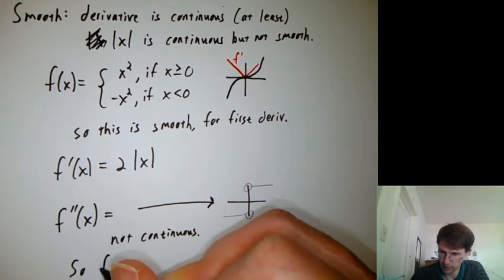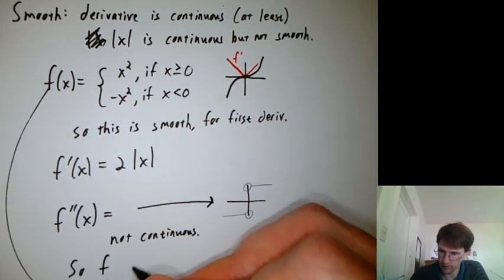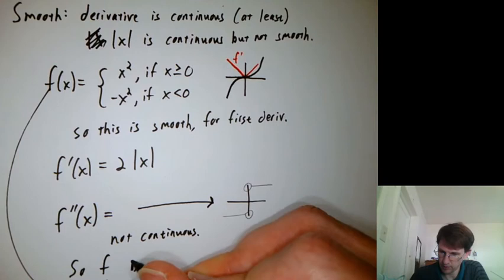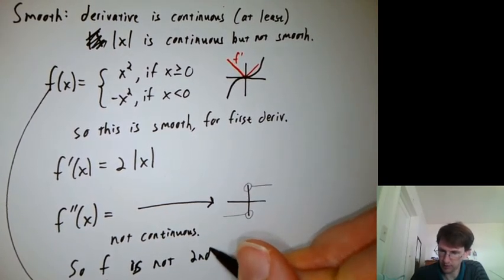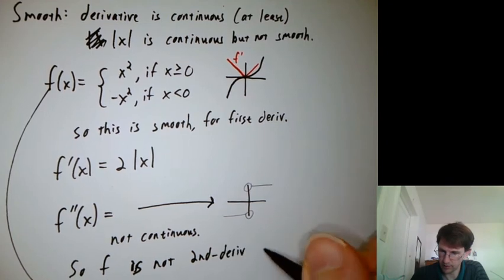So this original function f is not second derivative continuous, not second derivative smooth.